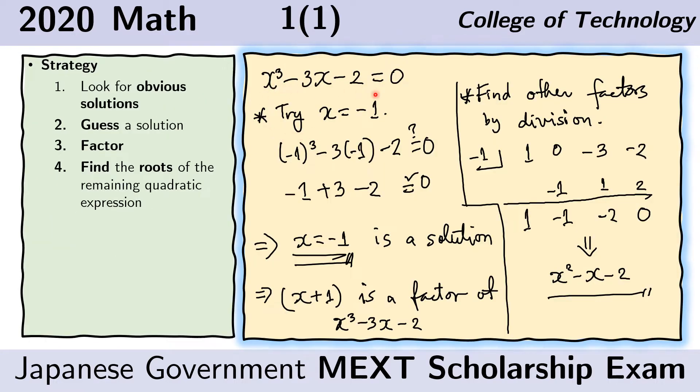For this given equation, there doesn't seem to be an obvious solution to me, so I will start guessing. Here I show the case for when my guess was x equals negative 1. So what we're going to show is that negative 1 satisfies this equation. That is, if I plug in negative 1 into the x's here, I should get an equality that is 0 on both sides. And if that is the case, then I can say that x equals negative 1 is a solution.